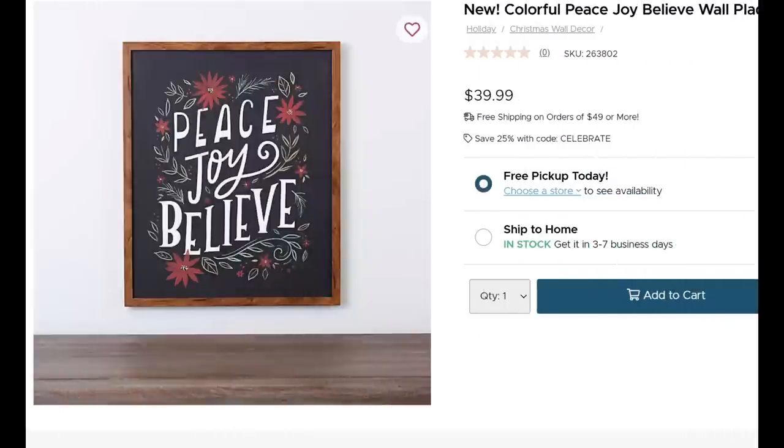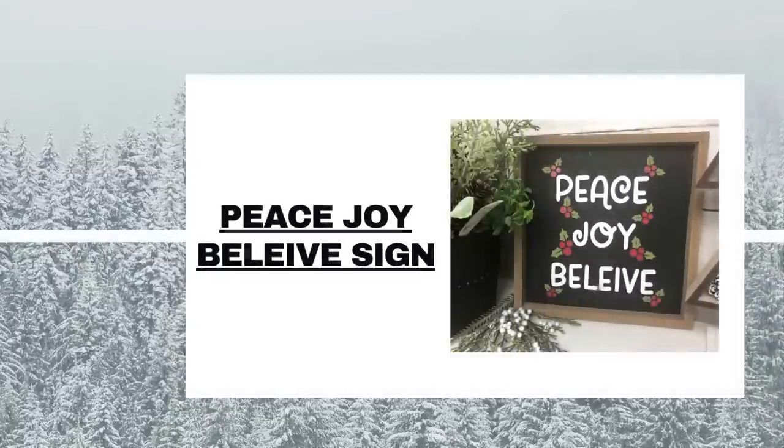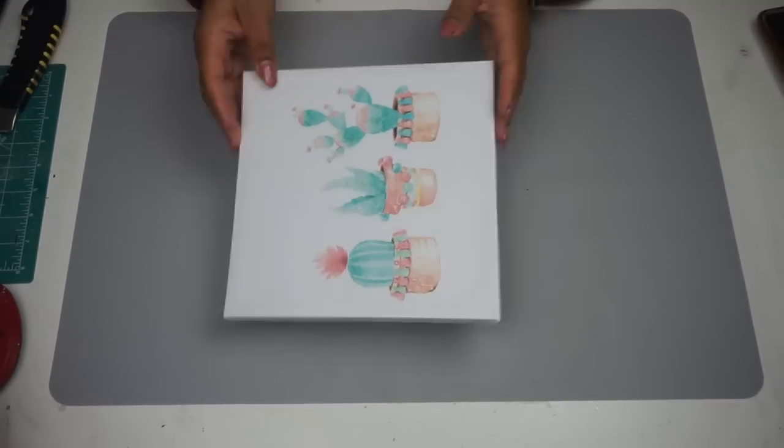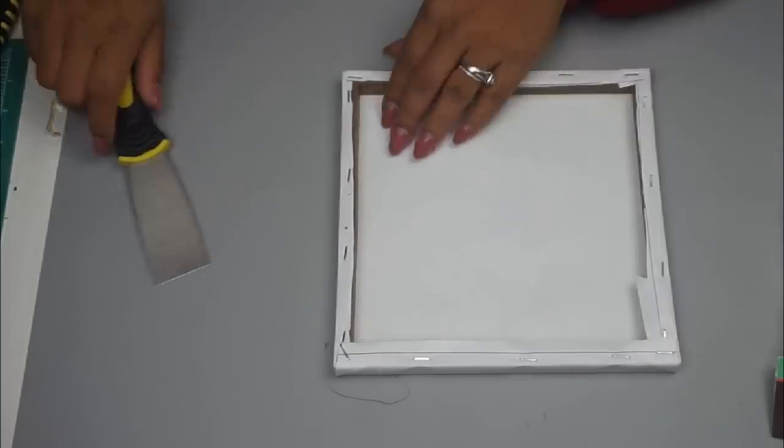Next up, I saw this gorgeous Peace, Joy, Believe sign. I love this. I love the colors to it. Still has that neutral kind of tone to it. But 40 bucks, I knew I could spend just a couple. So from Dollar Tree, I have this canvas. It's really cute. I love the front of it. So I'm going to save the front side of it.